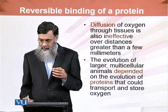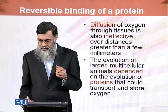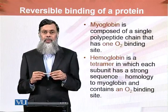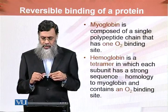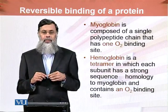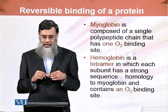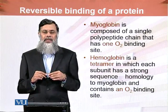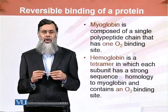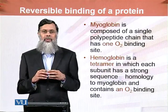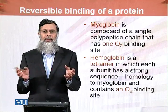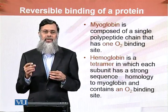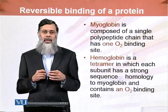Myoglobin is composed of a single polypeptide chain and has one oxygen binding site. It is a monomer with only one oxygen binding site.